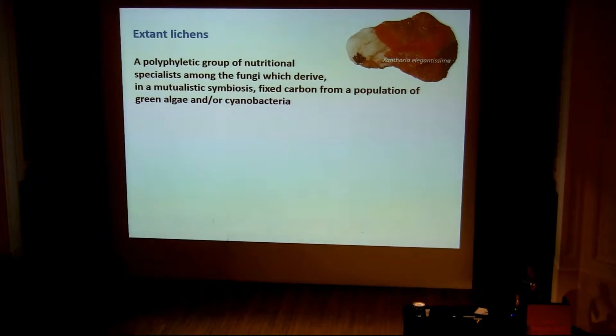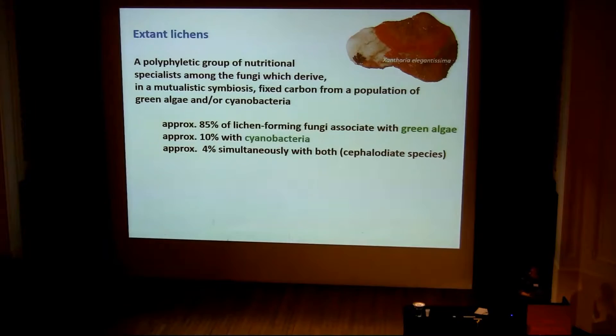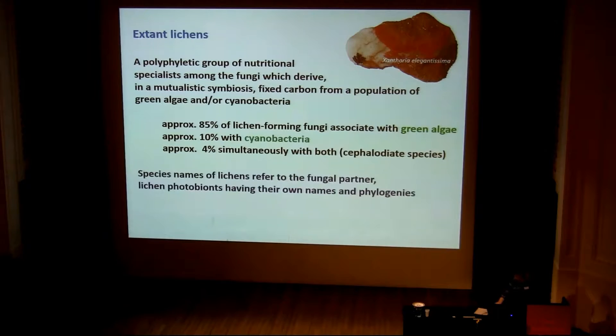Extant lichens are a polyphyletic group of nutritional specialists among the fungi. They get their fixed carbon in a mutualistic interaction with either green algae or cyanobacteria, or in a certain group even both. About 85% of lichen-forming fungi associate with green algae, approximately 10% with cyanobacteria, and about 4% have simultaneously both, which is very advantageous because these cyanobacteria are also diazotrophic — they fix nitrogen as well.